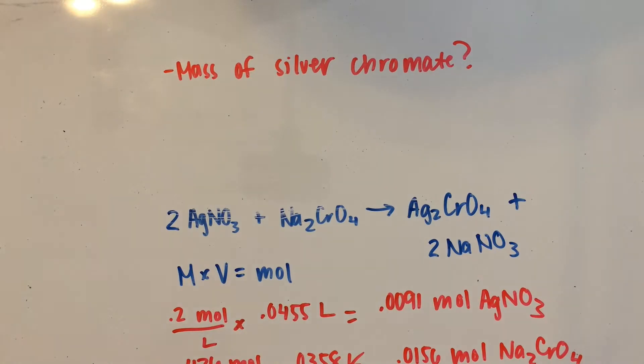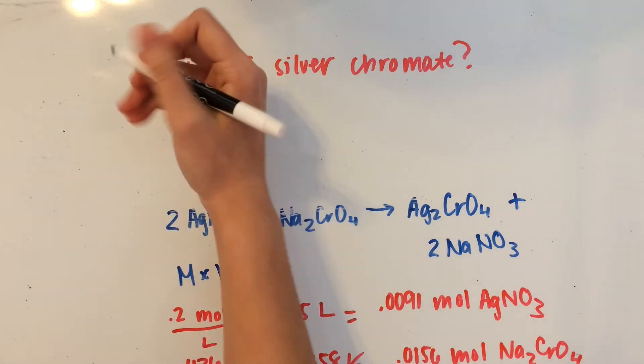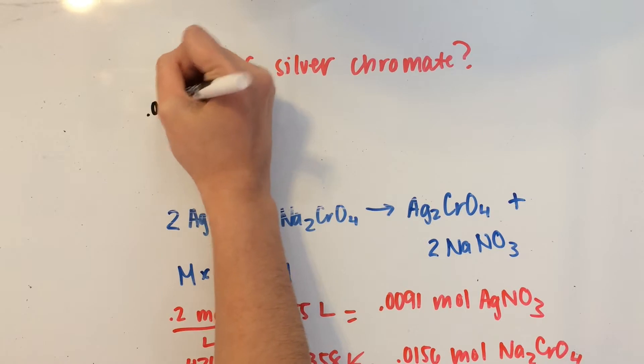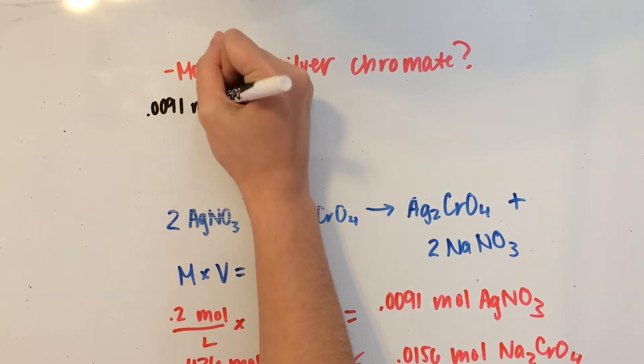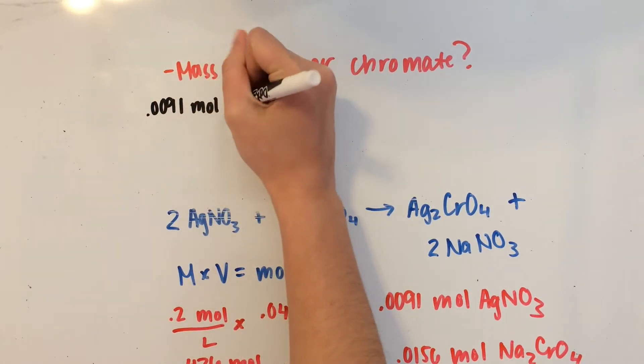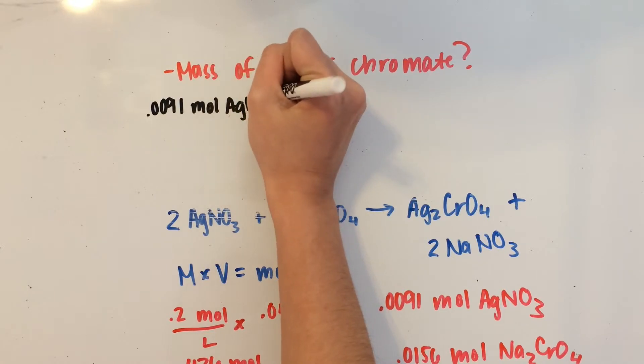Alright, now let's finish this up. We have this many moles of AgNO3 and this many moles of Na2CrO4. So whichever one is the limiting reactant will produce the least amount of silver chromate. So now let's see how many moles or what mass of silver chromate will come about when we use 0.0091 moles of AgNO3.